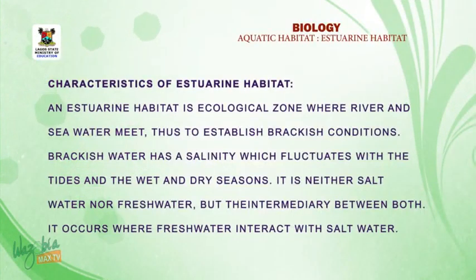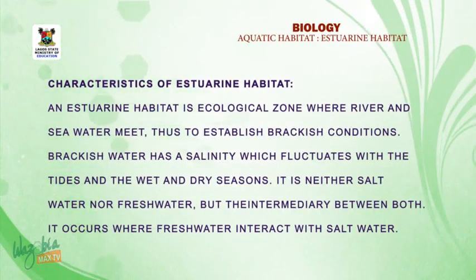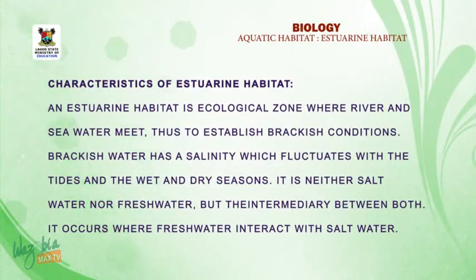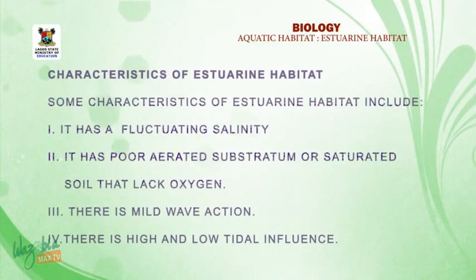It is neither salt water nor freshwater, but the intermediary between both, which means it occurs where fresh water interacts with salt water. So an estuarine habitat is a mixture — a place or junction where sea water meets with fresh water.